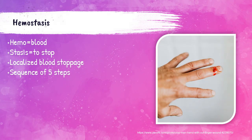Hemostasis is the inherent function of the body that both helps the body to stop bleeding after a short time from injury, to prevent extensive loss of blood, and also to maintain the blood as a fluid within the blood vessels. The word 'heme' is Greek for blood and 'stasis' means to halt, so hemostasis literally means to halt blood. This is dependent upon the interaction between blood vessels, platelets, and plasma proteins called coagulation factors. The process of hemostasis occurs in five steps, all of which we'll be discussing in this lecture.